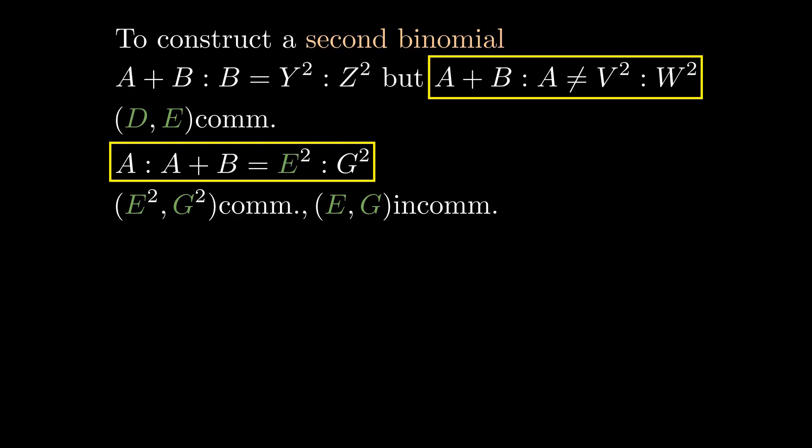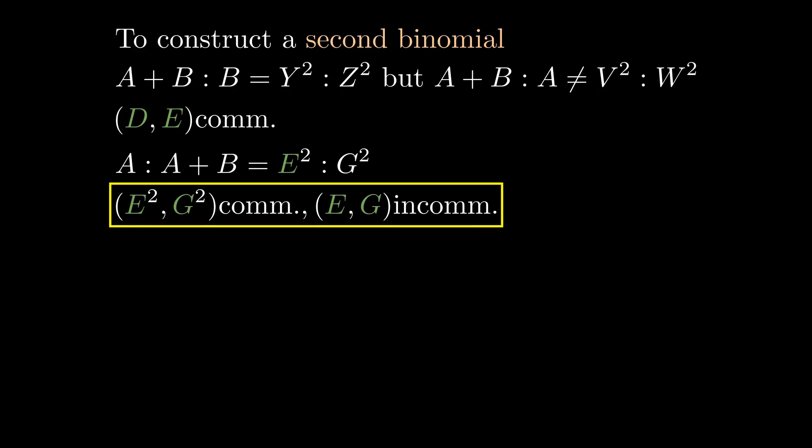So E and G are incommensurable. E and G are therefore rational but commensurable in square only, so E plus G is binomial, and we'll show it's a second binomial.